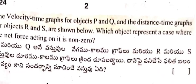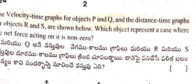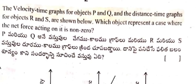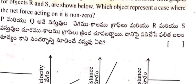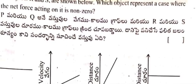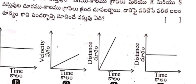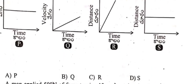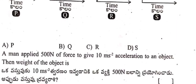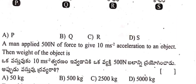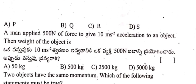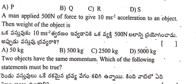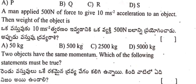The velocity-time graph for objects P and Q, and the distance-time graphs for objects R and S are shown below. Which object represents a case where the net force acting on it is non-zero? Diagrams for P, Q, R, S are given — options A: P, B: Q, C: R, D: S.